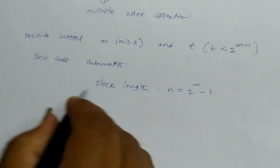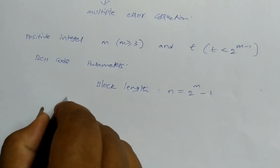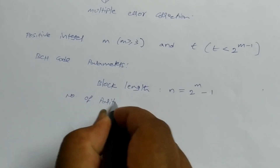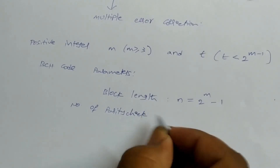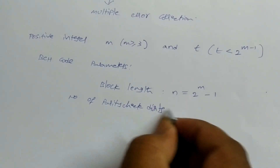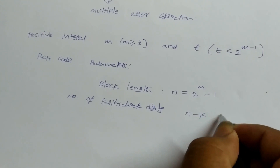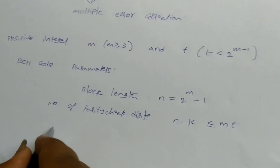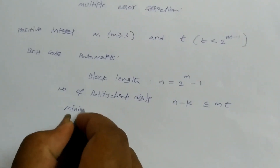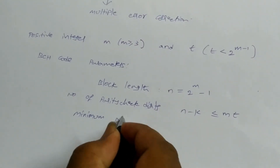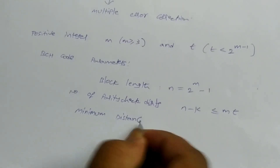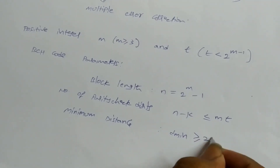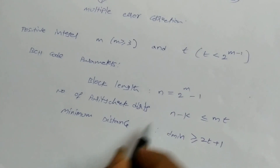The number of parity check bits, n minus k, must be less than or equal to m times 2t. The minimum distance d_min must be greater than or equal to 2t plus 1. These are the key parameters for BCH codes.